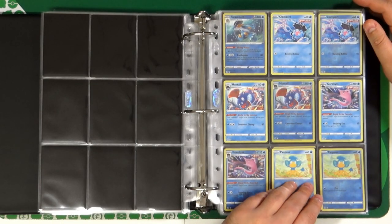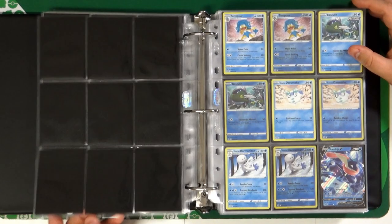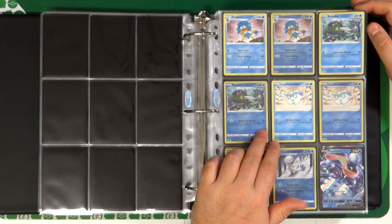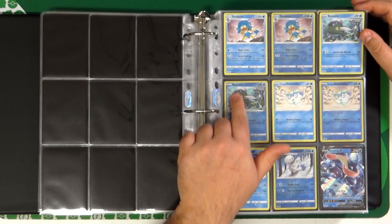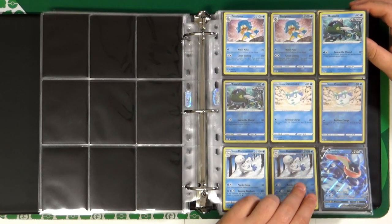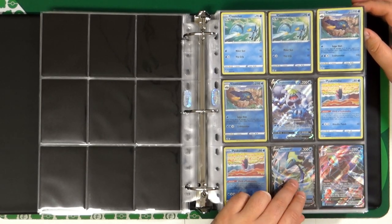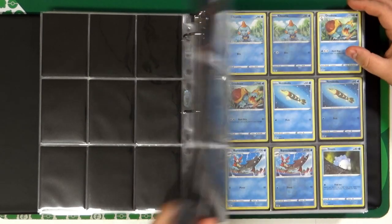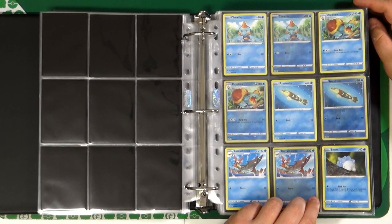Swampert, Wailord, Clamperl and its two evolutions, Simipour, Basculin. Unfortunately this kind of Basculin, the blue stripe, will not evolve into the beautiful Basculegion. Inteleon V and VMAX, Cramorant, Chewtle and Drednaw.